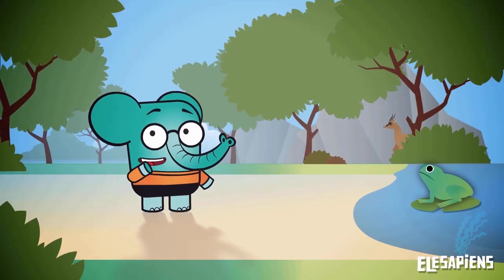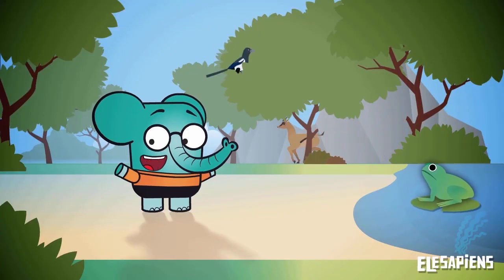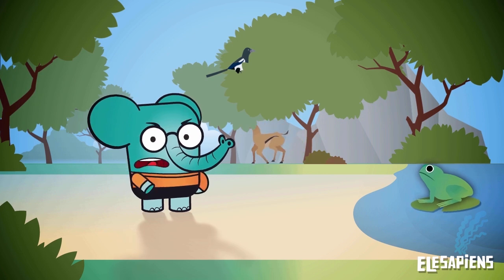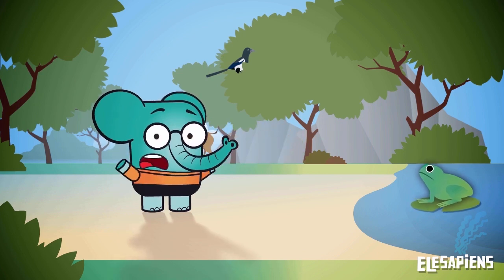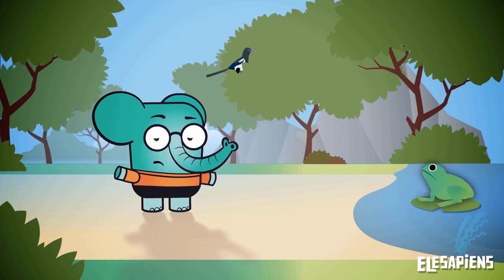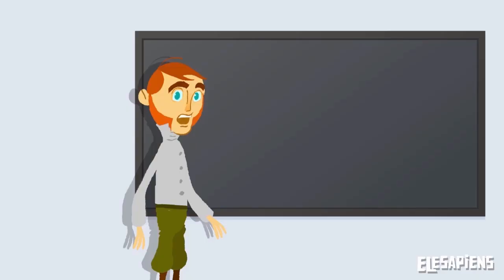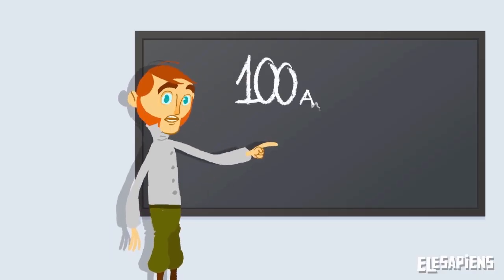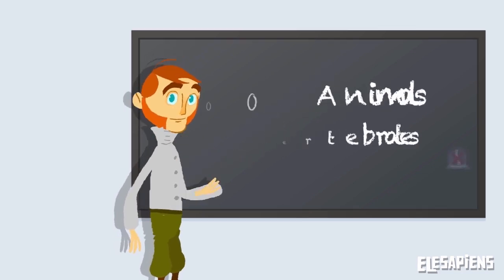All the animals that live around here are vertebrates. But where are the invertebrates? Those animals go more overlooked, but they are more numerous than vertebrates. Did you know that of 100 animals that live on Earth, 98 are invertebrates?